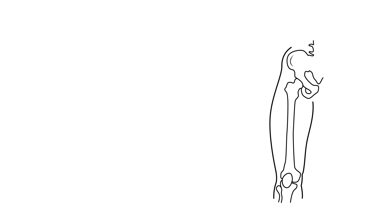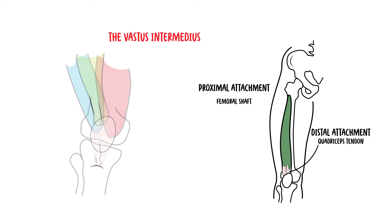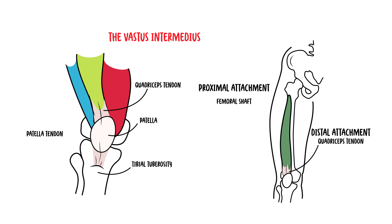Finally, the vastus intermedius is behind the rectus femoris. It originates from the anterior and lateral surfaces of the femoral shaft and forms the quadriceps tendon as well. The quadriceps muscles join and form the quadriceps tendon, which envelopes the patella, a sesamoid bone in front of the knee joint, and inserts onto the tibial tuberosity as the patellar tendon.